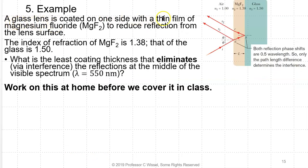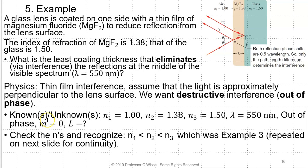A glass lens is coated on one side with a thin film of magnesium fluoride (MgF₂) to reduce reflection from the lens surface. The index of refraction of magnesium fluoride is 1.38 and that of the glass is 1.5. What is the least coating thickness that eliminates reflection from the middle of the visible spectrum? The physics of this is thin film interference. We assume light is approximately perpendicular to the surface and we want destructive interference. We write down the knowns and unknowns, being careful of units. We check the indices and recognize that N₁ < N₂ < N₃.